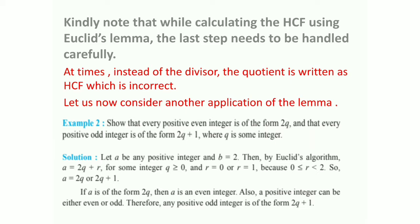Writing these questions correctly is very important. Please keep in mind the key words to be written: first, assume the value of a and b; then, according to the value of b, find the possible remainders keeping in mind 0 less than or equal to r less than b; then use a equals bq plus r to write the possible values of a; and finally justify the answer.